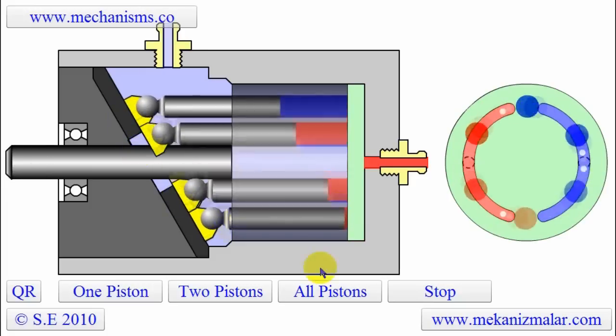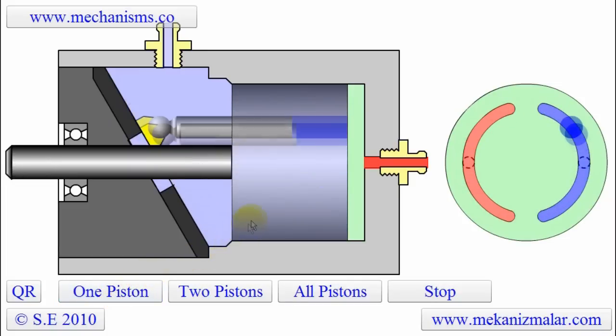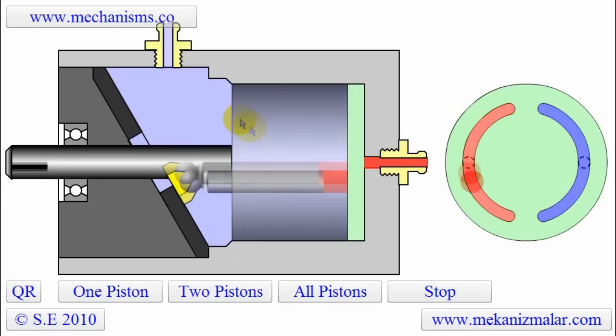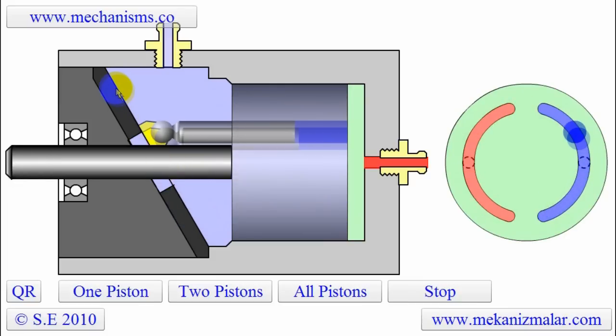Let's observe the motion of one piston inside the cylinder barrel. Notice that during one revolution the piston moves inside the cylinder barrel from the top left to the bottom right and back to the starting point.